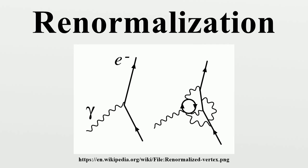Julian Schwinger discovered a relationship between zeta function regularization and renormalization, using the asymptotic relation as the regulator lambda goes to infinity. Based on this, he considered using the values of the zeta function to get finite results. Although he reached inconsistent results, an improved formula studied by Hartl, Garcia, and based on the works by E. Elizalde includes the technique of the zeta regularization algorithm, where the b's are the Bernoulli numbers and every divergent series can be written as a linear combination of zeta function values. Using the Abel-Plana formula, for every divergent integral, this is valid when m is greater than zero.